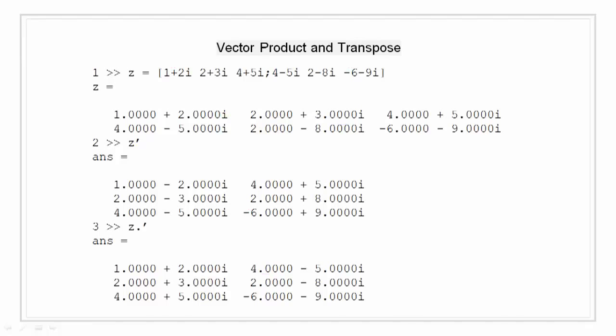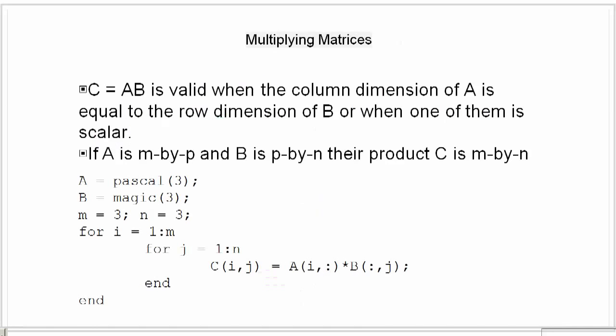Multiplying matrices. Multiplication of matrices is defined in a way that reflects the composition of the underlying linear transformation and allows compact representation of system of simultaneous linear equations. The matrix product C is equal to AB is defined when the column dimension of A is equal to the row dimension of the B or when one of them is scalar. So, if A is M by P and B is P by N, then their product C is M by N.